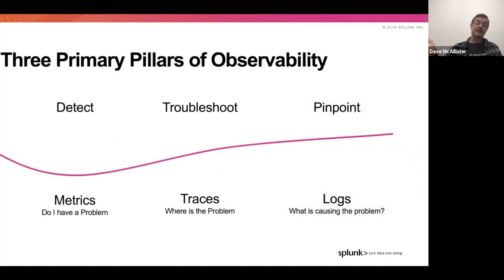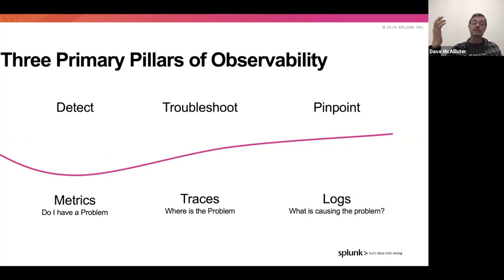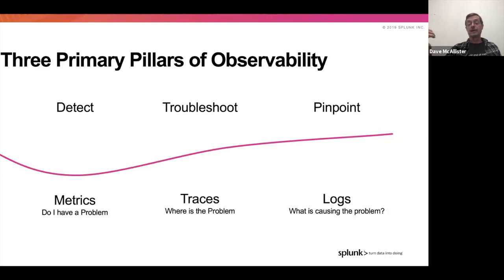The primary pillars of observability are metrics, traces, and logs. Metrics: how do I tell that something has gone wrong? Do I have a problem? Metrics let you start looking at alert capabilities. Traces: where is the problem, getting as close as I can. And finally, logs: what's causing the problem? Pinpointing the functionality is really the aspect of logs and log structures.